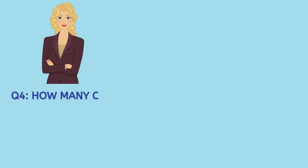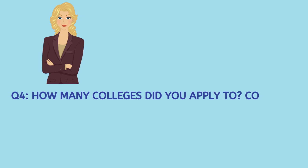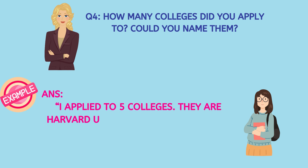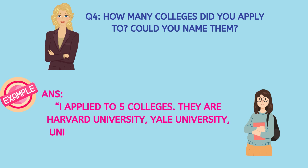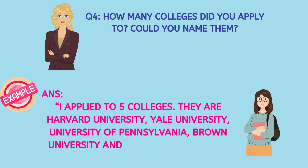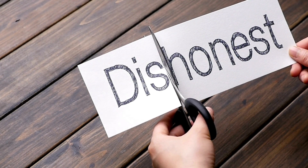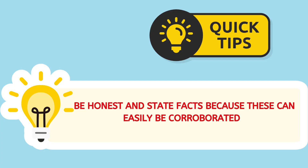Then comes the next question. Generally, they would like to know how many colleges did you apply to — could you name them? Here you can answer honestly: I applied to five, six, seven — whatever is the number of colleges you applied to — and tell the names of these colleges. Please be very honest here because these facts can be easily cross-checked. So try to be as close to the truth as possible.